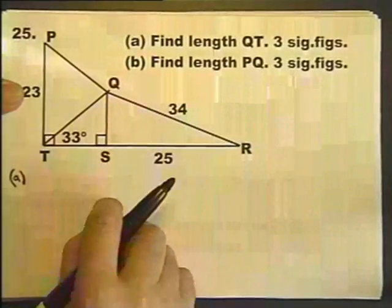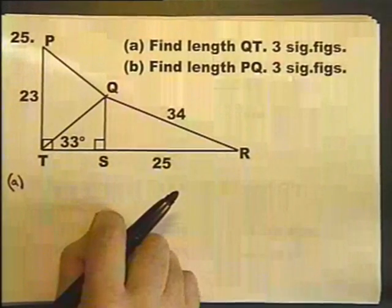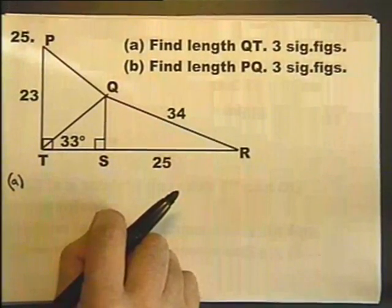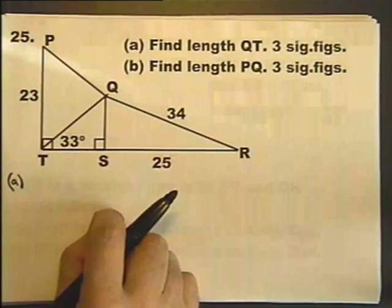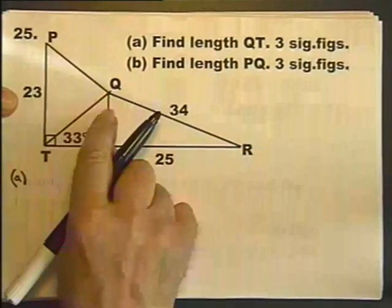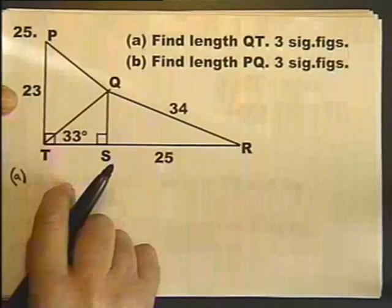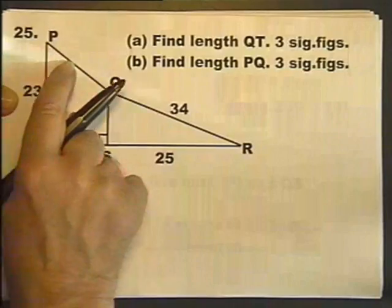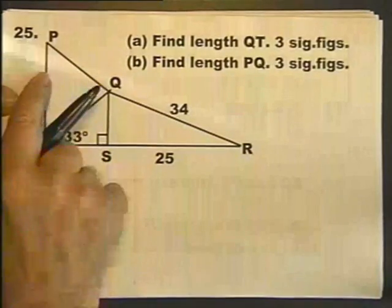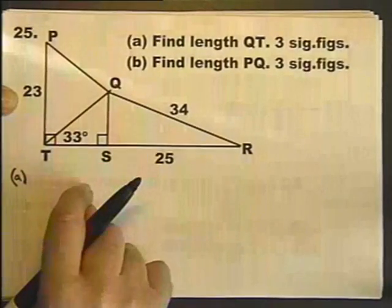I've got to find QT. Now, it may not be possible to find a value directly. If you consider this triangle here, all you know is that angle. That's not enough to work that out. If you look at this triangle, all you know is that distance. So, that's not enough to work it out.